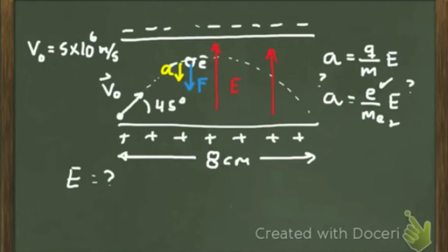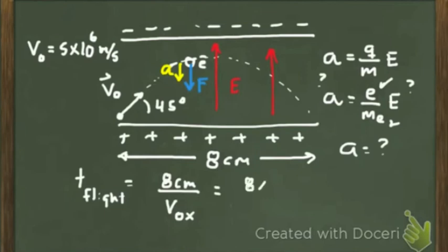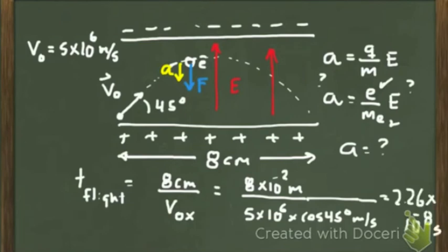The task is to use the given information to find the acceleration. We start by finding the time of flight: the time for the electron to travel the horizontal distance of 8 centimeters. That time equals 8 times 10 to the minus 2 meters divided by the x component of the initial velocity, which is 5 times 10 to the 6 times cosine of 45 degrees. This gives a time of flight of 2.26 times 10 to the minus 8 seconds.